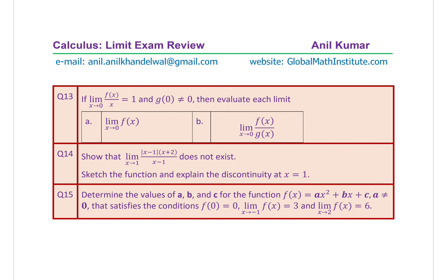Questions 13, 14, and 15 are the last three questions of the test. Question 13: if the limit of f of x over x as x approaches 0 is 1, and g of 0 is not equal to 0, then evaluate: A) limit of f of x as x approaches 0; and B) limit of f of x over g of x as x approaches 0. Question 14: show that the limit of absolute value of (x minus 1) times (x plus 2) divided by (x minus 1) as x approaches 1 does not exist.